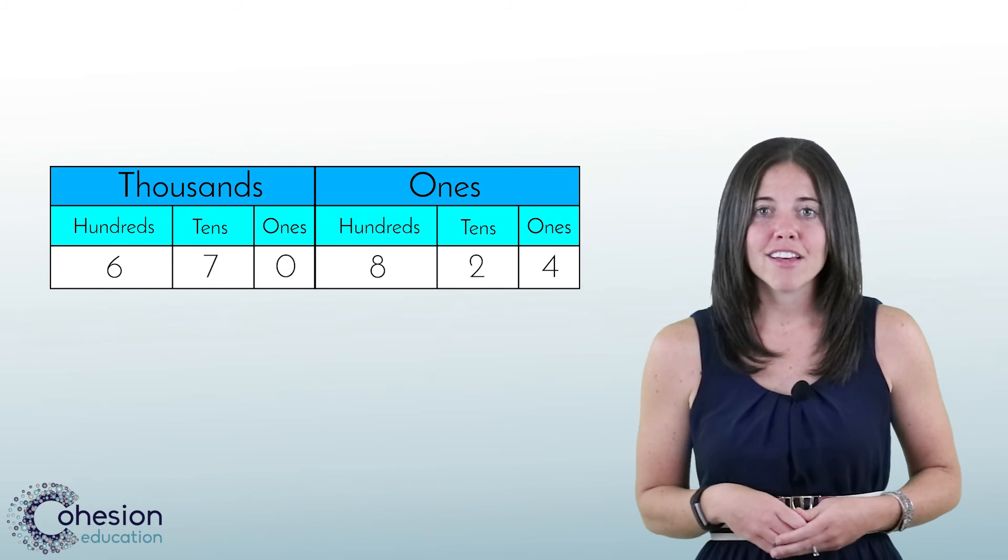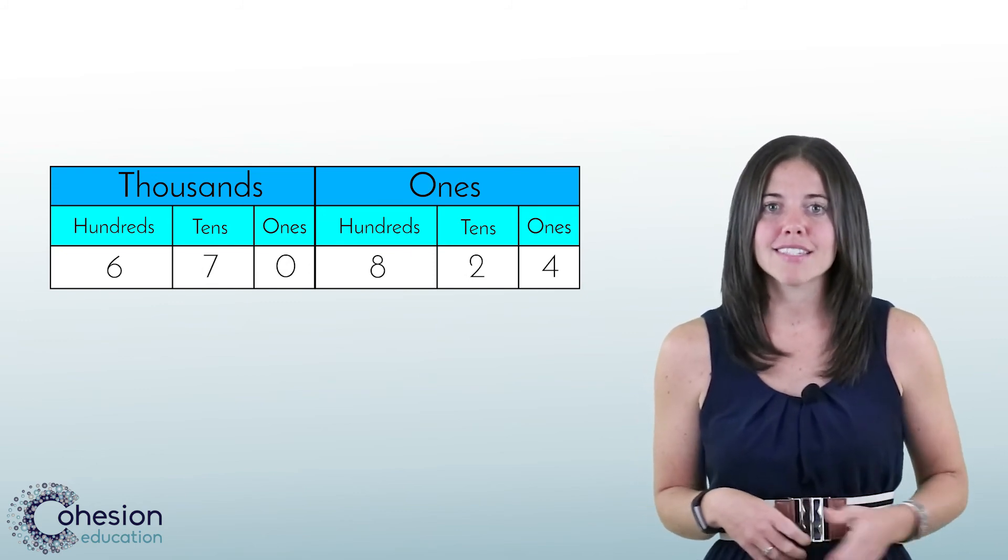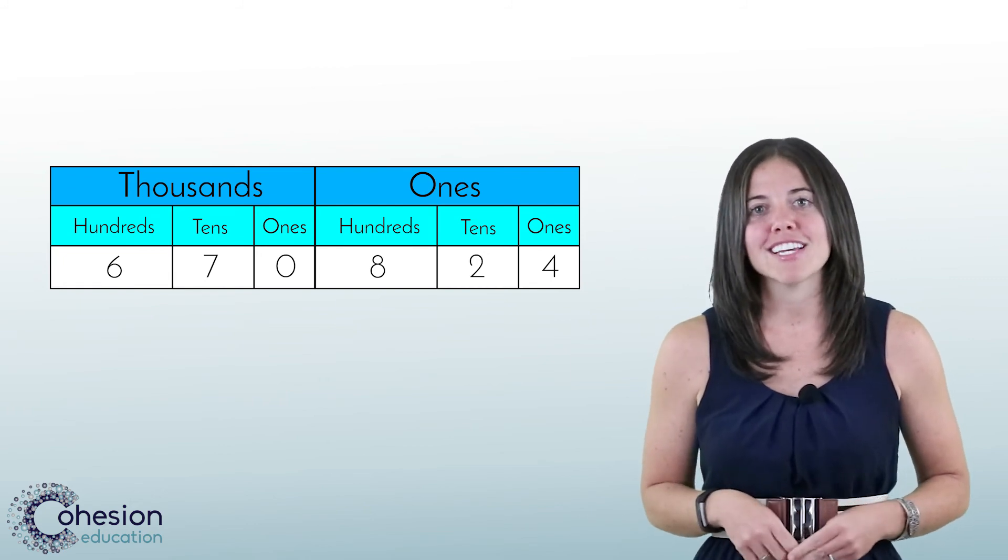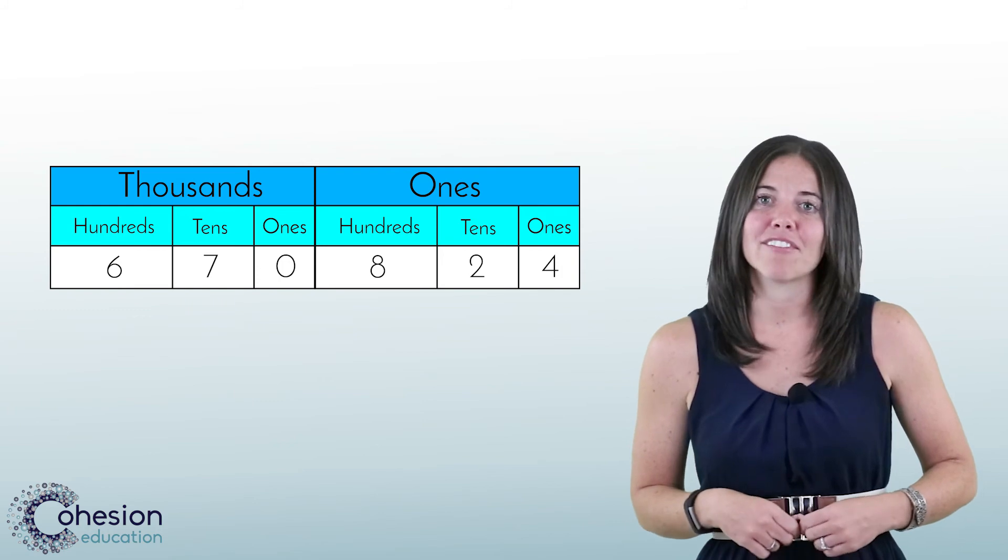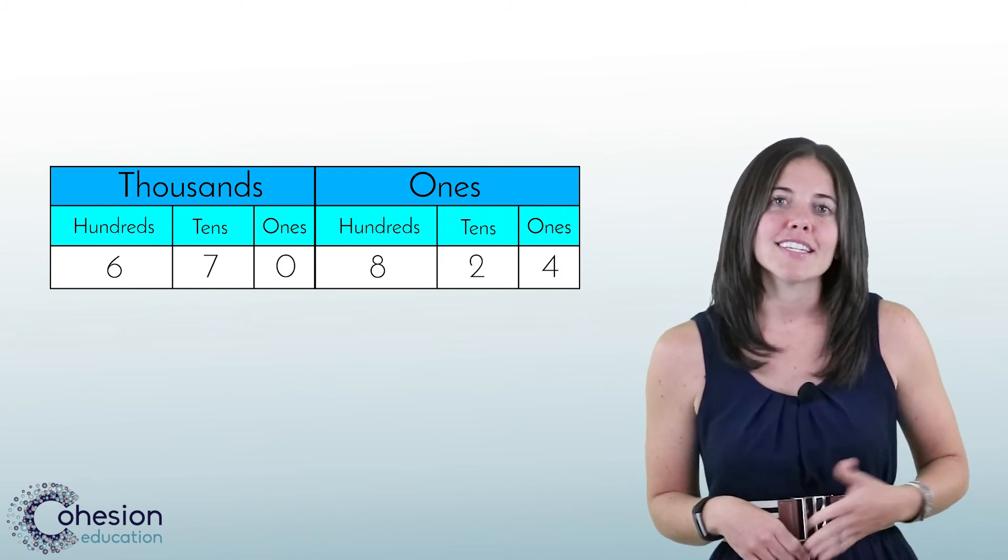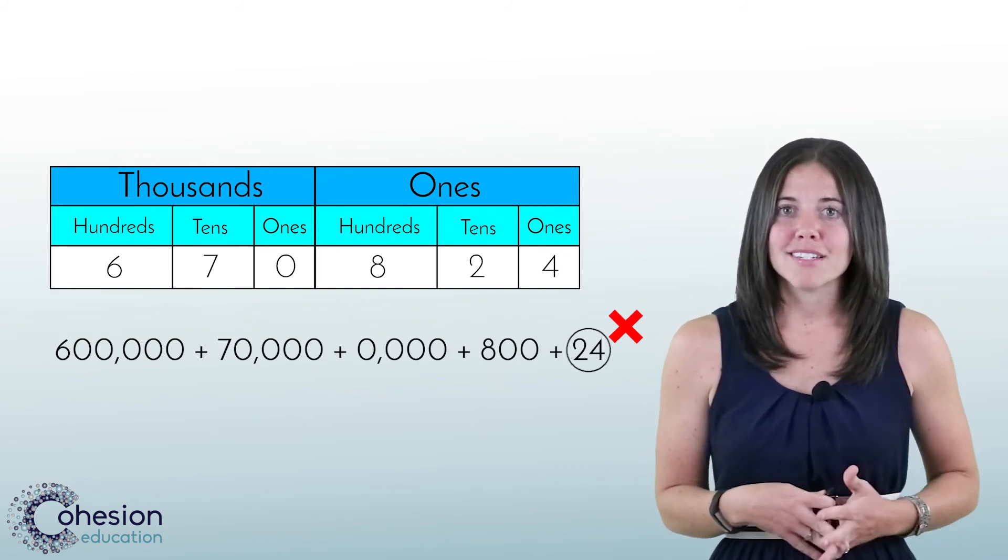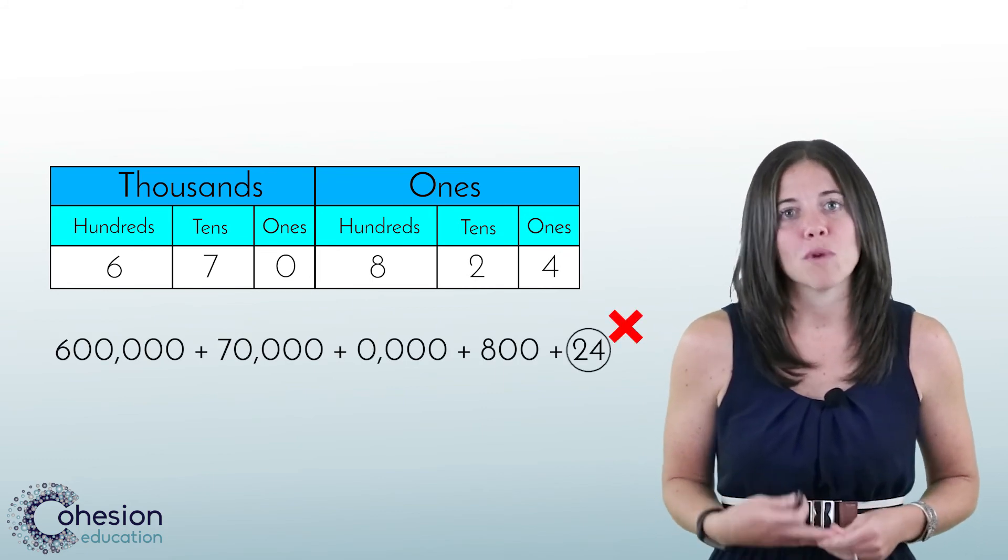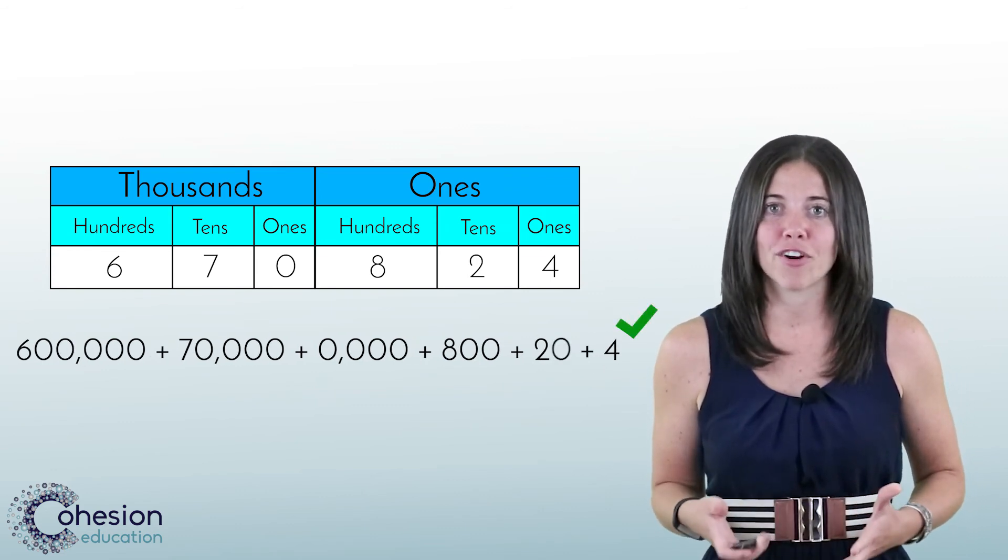On a smaller scale, be aware of errors in the smaller place values like ones and tens. Students will put so much effort and attention into the larger place values. They can make silly mistakes, like representing 670,824 as 600,000 plus 70,000 plus 0,000 plus 800 plus 24. Use a place value chart to illustrate why this representation is incorrect.